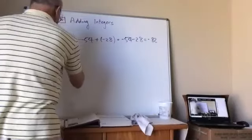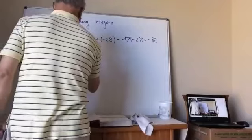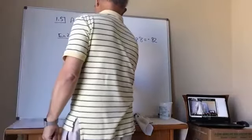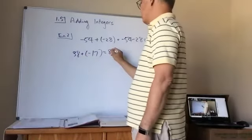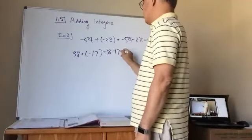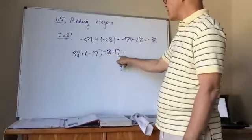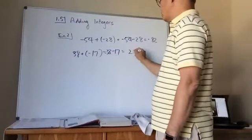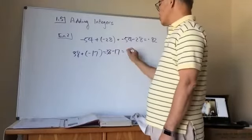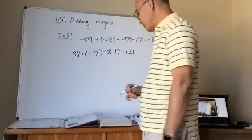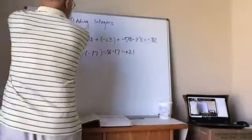Part b: 38 plus negative 17. Different signs, so I subtract: 38 minus 17 equals 21. The positive number, 38, is larger, so the answer is positive 21.